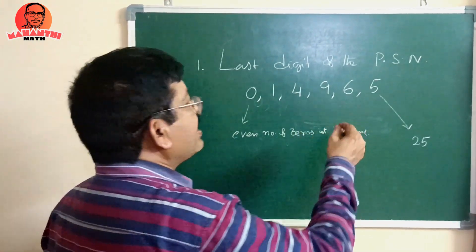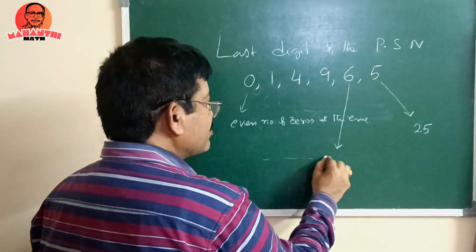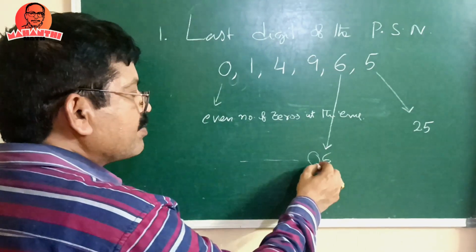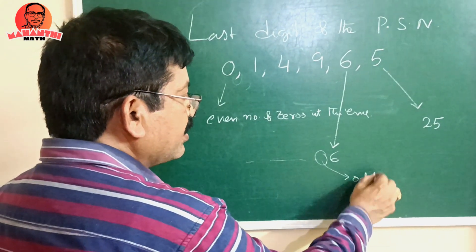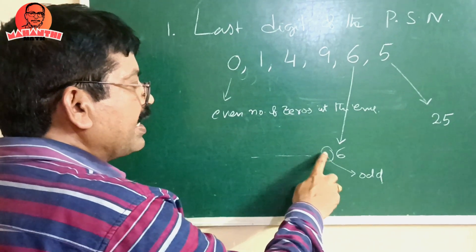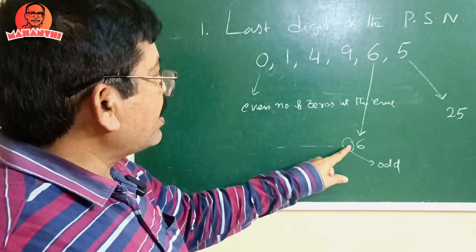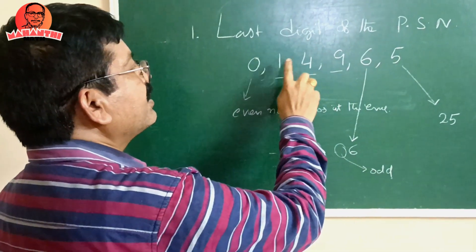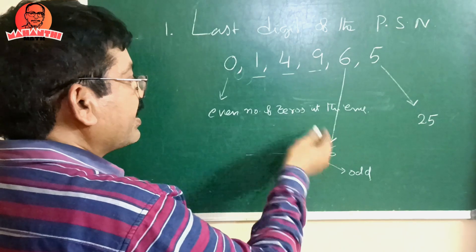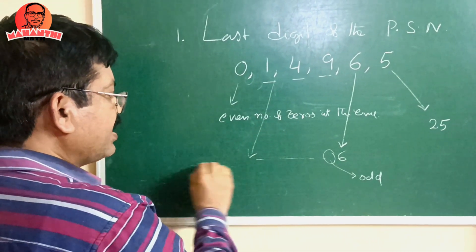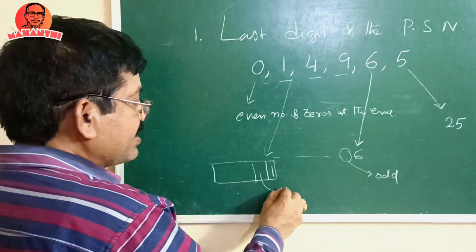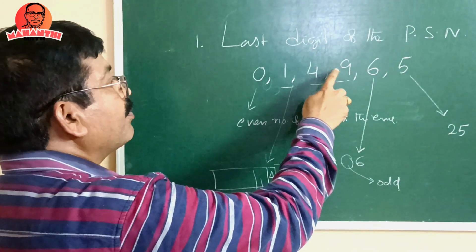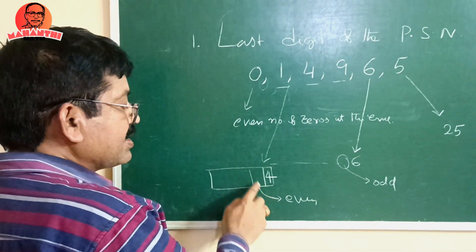Another property: if a perfect square ends with 6, the tens digit must be odd — there must be an odd number in the tens place. If the tens digit is even, it cannot be a perfect square. For the remaining last digits — 1, 4, or 9 — the tens digit must be an even number. So if a number ends with 1, the tens digit must be even; if it ends with 4, tens digit must be even; if it ends with 9, tens digit must be even.